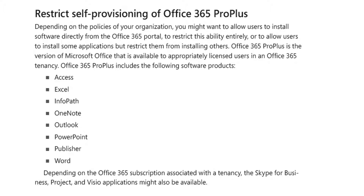Restrict Self-Provisioning of Office 365 Pro Plus. Depending on the policies of your organization, you might want to allow users to install software directly from the Office 365 portal, restrict this ability entirely, or allow users to install some applications but restrict them from installing others. Office 365 Pro Plus is the version of Microsoft Office available to appropriately licensed users in an Office 365 tenancy. Office 365 Pro Plus includes the following software products: Access, Excel, InfoPath,